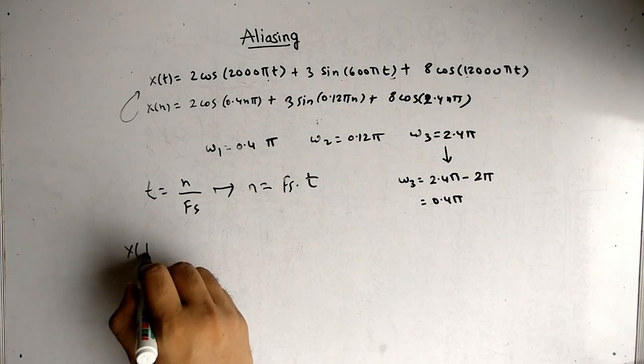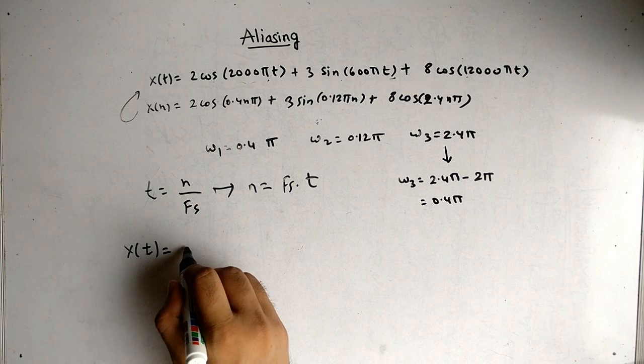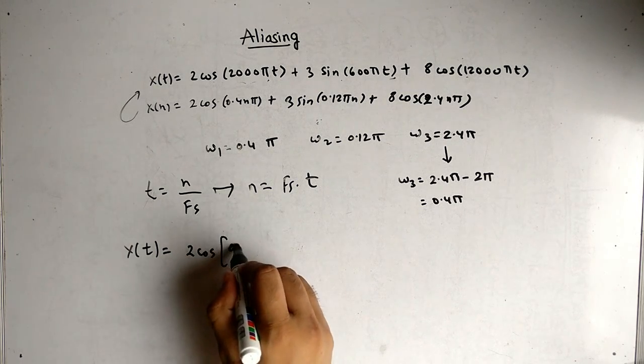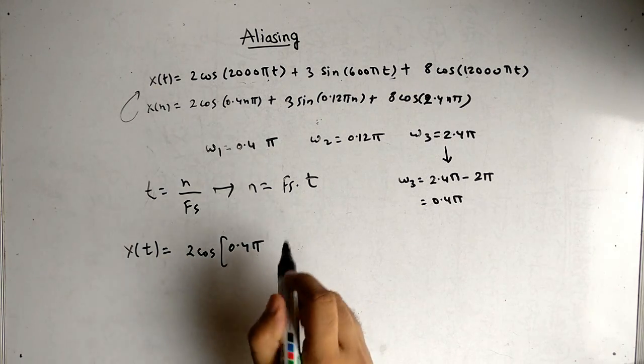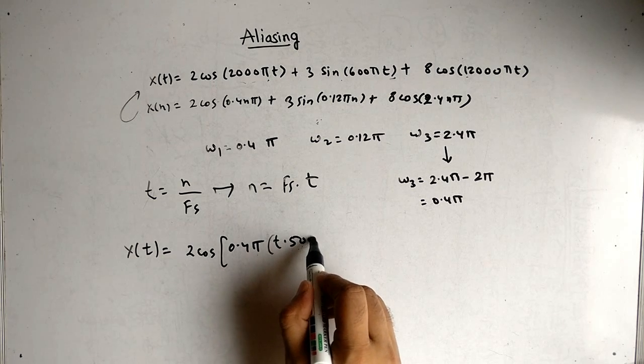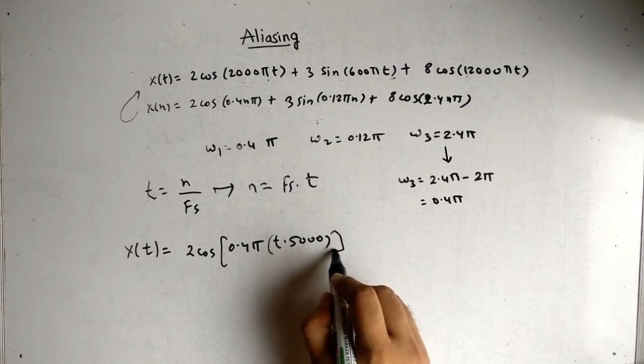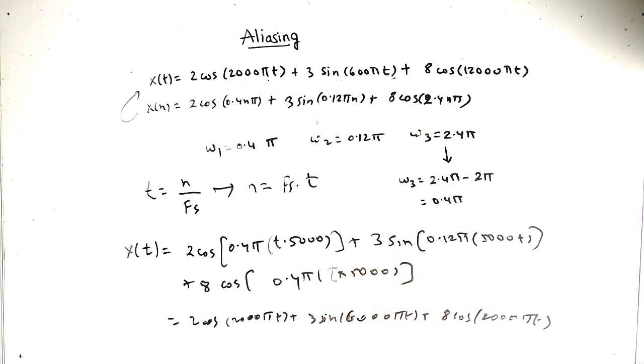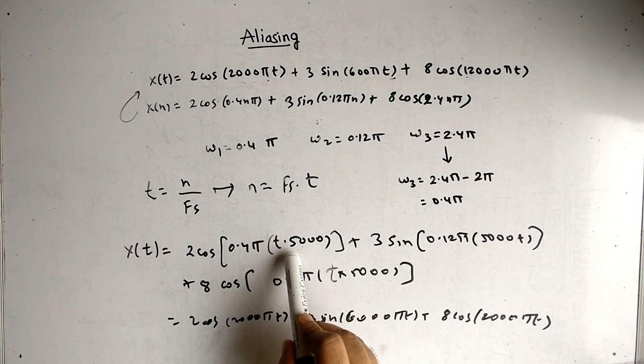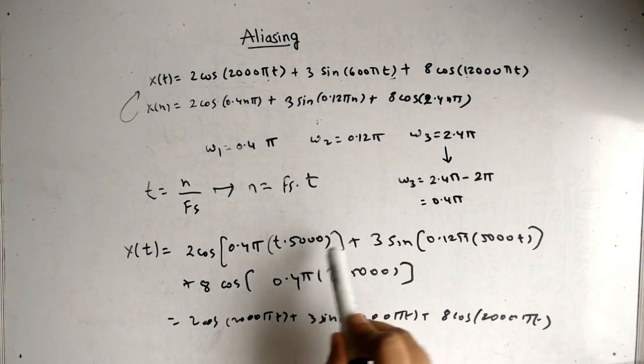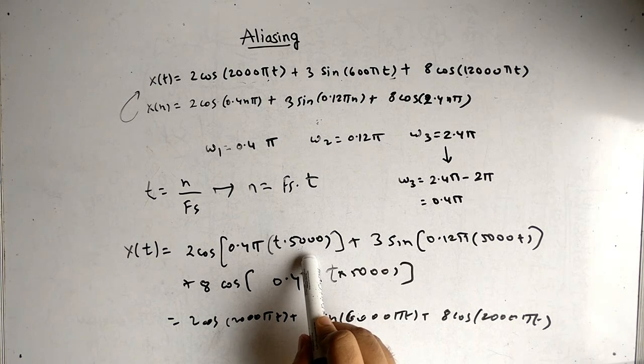So x(t) is equal to 2 times cos of 0.4 pi, where n is changed to t times 5000, because fs was 5000. Similarly for the rest. Wherever is the n, n is converted into t times fs where fs is 5000.